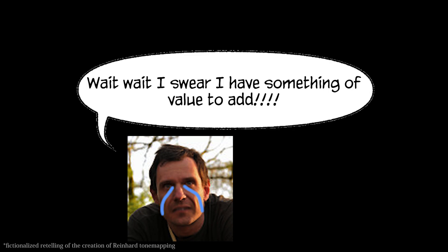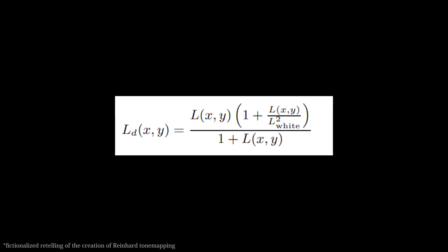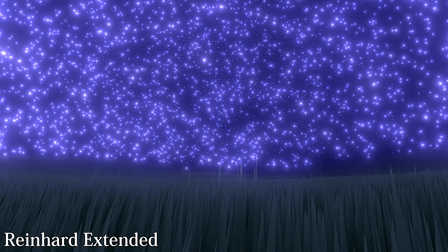Reinhardt came back and said he had something of value to add, and presented his Reinhardt Extended tone mapper, which takes this fault into account by defining a white point — the color value that corresponds to white, generally the value of the brightest color on screen. Reinhardt Extended became the new standard tone mapper, as it did a much better job at preserving the detail of high luminance areas than Tumblin-Rushmeyer.